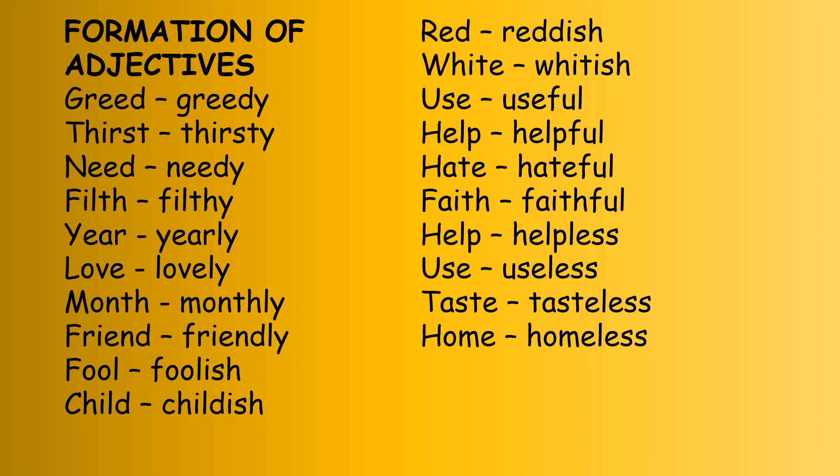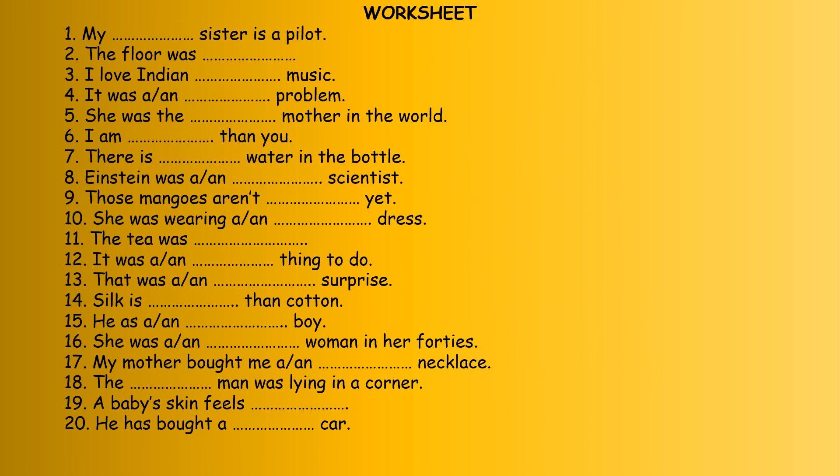These are how to form adjectives. A root word becomes an adjective by adding a suffix. For example: greed becomes greedy, thirst becomes thirsty, need becomes needy, filth becomes filthy, year becomes yearly, love becomes lovely, month becomes monthly, friend becomes friendly, fool becomes foolish, child becomes childish, red becomes reddish, white becomes whitish, use becomes useful, help becomes helpful, hate becomes hateful, faith becomes faithful, help becomes helpless, use becomes useless, taste becomes tasteless, home becomes homeless.